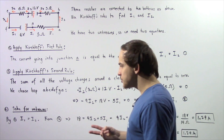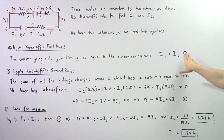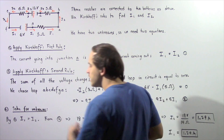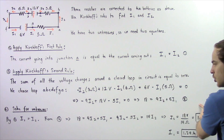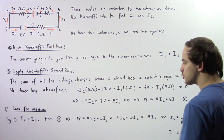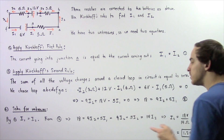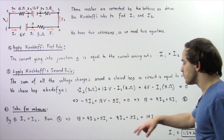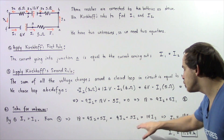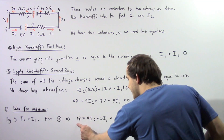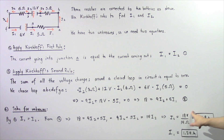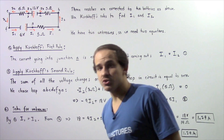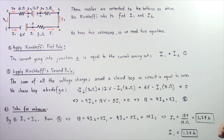Now we have two equations to solve for our two unknowns. From Equation 1, I1 equals I2. Substituting into Equation 2: 9I2 plus 5I2 gives 14I2 equals 18, so I2 equals 18 divided by 14, which is approximately 1.29 amps. Since I1 equals I2 by Kirchhoff's first rule, I1 is also equal to 1.29 amps.